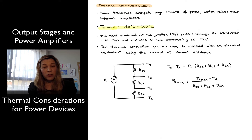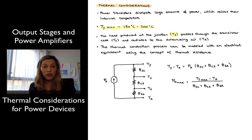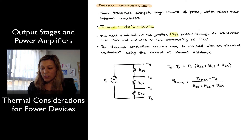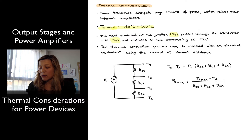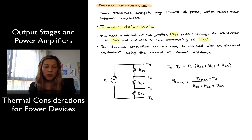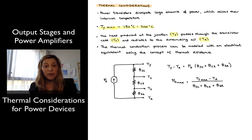The heat that is produced at the junction, which is sitting at the temperature T sub J for junction temperature, passes through the transistor case, which is sitting at the temperature referred to as T sub C, or case temperature, and it radiates into the surrounding air, referred to as the ambient temperature T sub A. For most datasheets, the nominal ambient temperature is assumed to be 25 degrees C, and that's often the testing conditions for a lot of these devices.